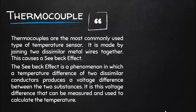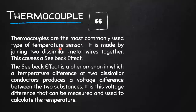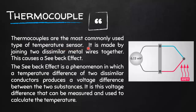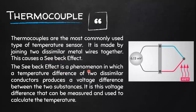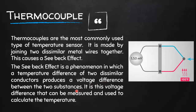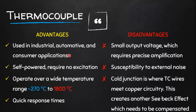Let us start by explaining what a thermocouple is. Thermocouples are the most commonly used type of temperature sensor. It is made by joining two dissimilar metal wires together, which causes a Seebeck effect. The Seebeck effect is a phenomenon in which a temperature difference between two dissimilar conductors produces a voltage difference between the two substances.